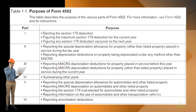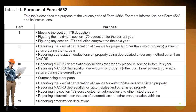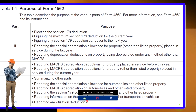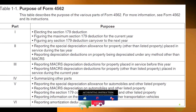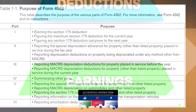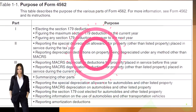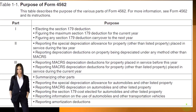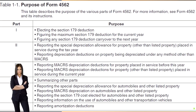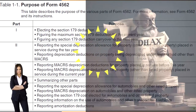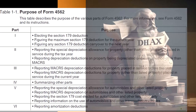Form 4562 has several parts. Part 1 covers electing the Section 179 deduction, figuring the maximum Section 179 deduction for the current year, and figuring any Section 179 carryover to the next year. Part 2 covers reporting the special depreciation allowance for property other than listed property placed in service during the tax year, and reporting depreciation deductions under any method other than MACRS. Part 3 covers reporting MACRS depreciation — MACRS being the standard tax depreciation method, typically a double declining balance with a half-year convention.